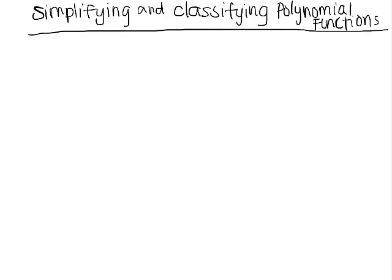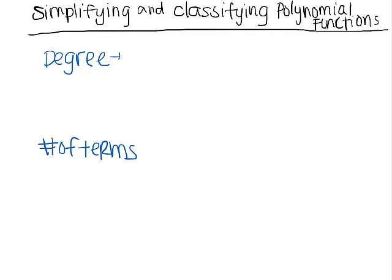Hi everybody. Today we're going to take a look at how to classify and simplify a polynomial function. When you classify a polynomial, you think about two things: the degree of the polynomial and its number of terms. The degree of the polynomial comes from when the polynomial is in standard form — it's the highest exponent when the polynomial is written in standard form.